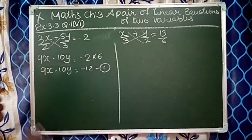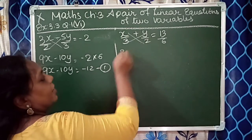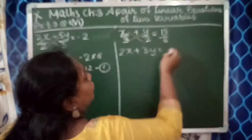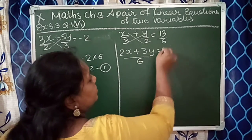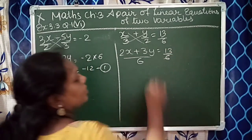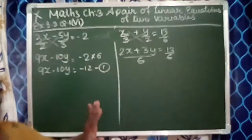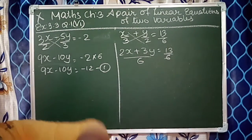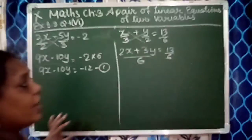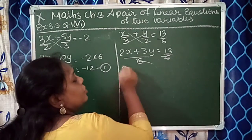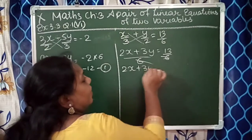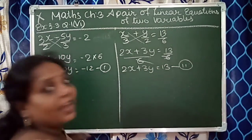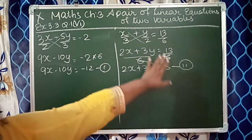Now for the second part also, multiply by 2 and 3. 2x plus 3y is equal to 13 upon 6. When the denominator is the same, we can cancel them. So this equation becomes 2x plus 3y is equal to 13. We got our second equation also.